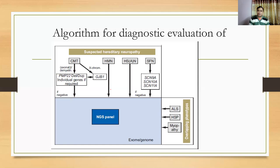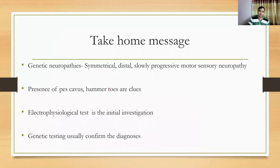If there is still doubt, we can send for an NGS next-generation panel, which can detect different mutations simultaneously. This is how we can diagnose hereditary neuropathies. The take-home message from today's presentation: